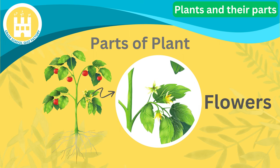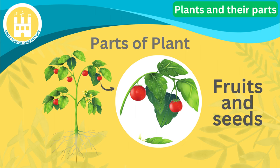Next, flowers. Flowers are beautiful and often colorful. They attract insects and birds, which help in pollination. Pollination is how plants reproduce, making new plants. Lastly, fruits and seeds. After pollination, flowers turn into fruits, and inside these fruits we find seeds. Seeds are like tiny plant babies — they can grow into new plants when they have the right conditions.